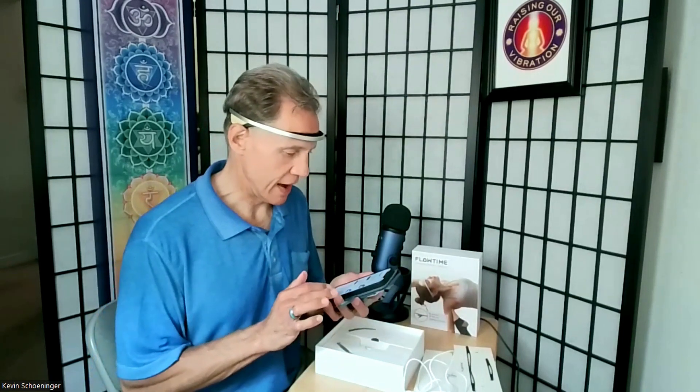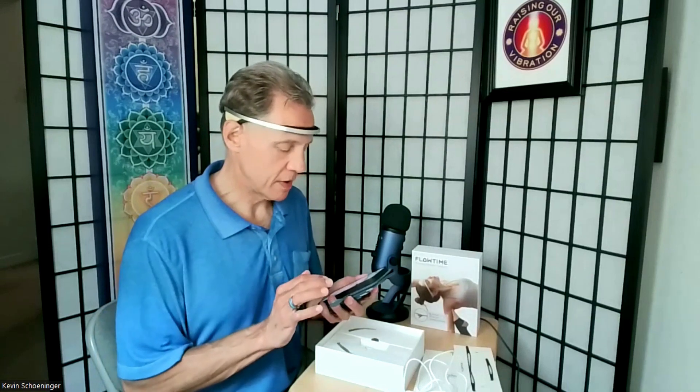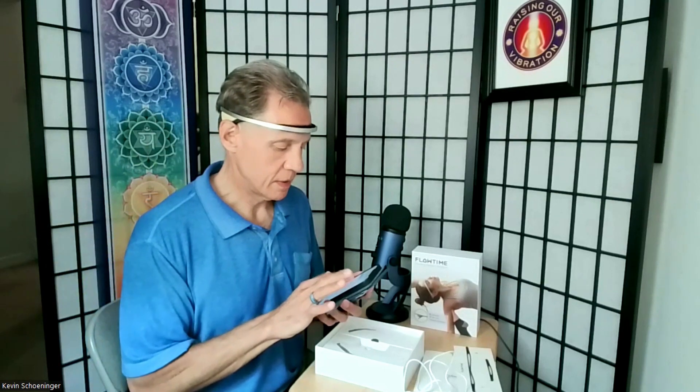So it looks like my assumption about the headset being charged was wrong. I've charged it up for 30 minutes, and now I'm ready to get the Flowtime headset connected to the app. I open the app on my phone. In the upper right-hand corner of the home screen, I click on the headband icon, but first I have to hit the power button. Turn that on, and then hit connect.